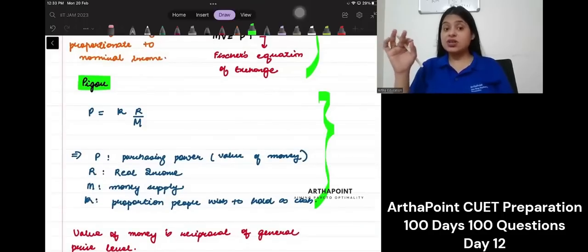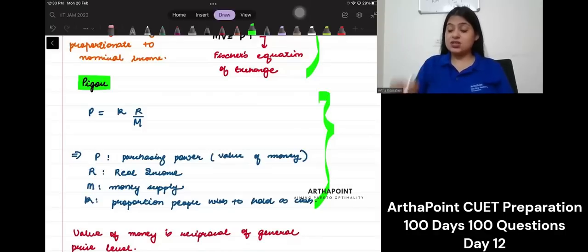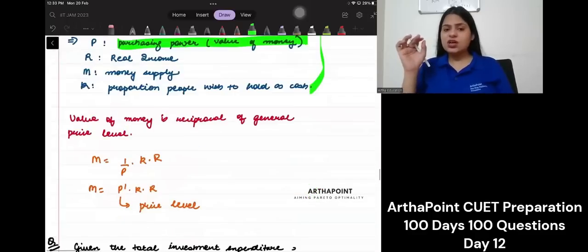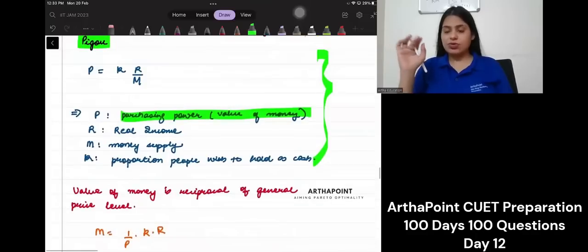R is the real income. Here, what Pigou gave, P is not price. P is value of money, the purchasing power. Okay. Fine. So, this is about it.